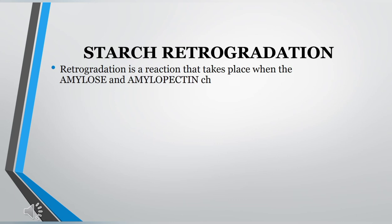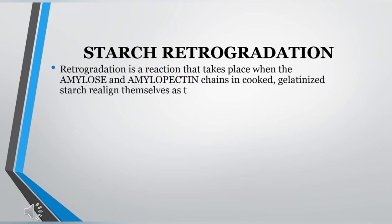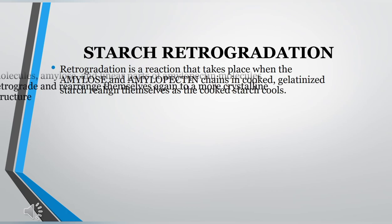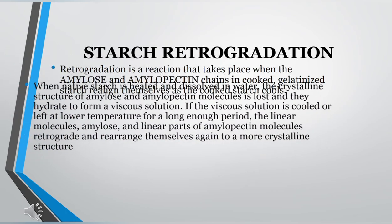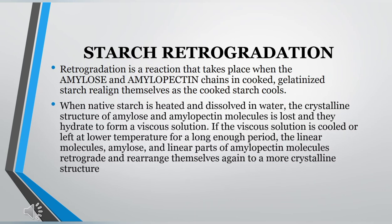Retrogradation is a reaction that takes place when the amylose and amylopectin chains in cooked, gelatinized starch realign themselves as the cooked starch cools. When native starch is heated and dissolved in water, the crystalline structure of amylose and amylopectin molecules is lost and they hydrate to form a viscous solution.